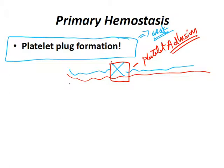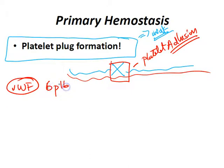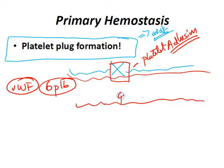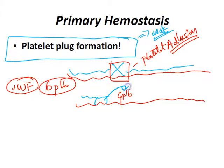When you get endothelial injury and subendothelial collagen is exposed, platelets adhere to Von Willebrand's factor in the subendothelium. Von Willebrand's factor is synthesized in endothelial cells and also in megakaryocytes. He's going to bind to something called GP1B — that's what Von Willebrand's factor binds to.